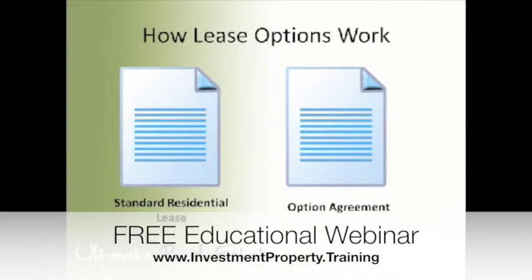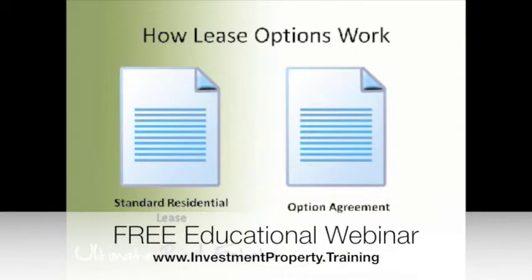The first one on the left here is a standard residential lease. If you've ever signed a lease or if you're a landlord, this is the standard residential lease that we use — the same one you'd get from a local real estate agent, where you pay some money and get to live in a property. The only difference with a lease option is we have this one piece of paper called an option agreement that gives the person the right to purchase that property down the track for a certain price — for example, the right to purchase for $300,000 for the next three years.